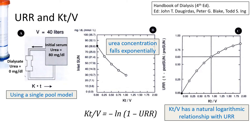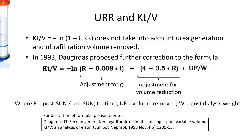What is the mathematical relationship between urea reduction ratio and KT/V? This is demonstrated in this experimental setup using a single pool model, in which we assume the patient to be a single compartment of fluid. As dialysis occurs, urea concentration falls exponentially. This means that KT/V has a very simple natural log relationship with the urea reduction ratio. And therefore, the simplest formula for KT/V is equals to negative ln(1 minus urea reduction ratio). This simple formula of negative ln(1 minus URR) does not take into account urea generation while dialysis is ongoing, and also additional clearance from ultrafiltration.